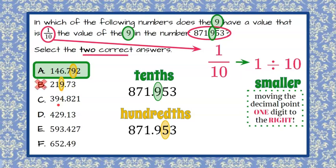C, the digit that has the 9, is the tens digit. And that is two digits to the left instead of two digits to the right. So that one wouldn't be correct.